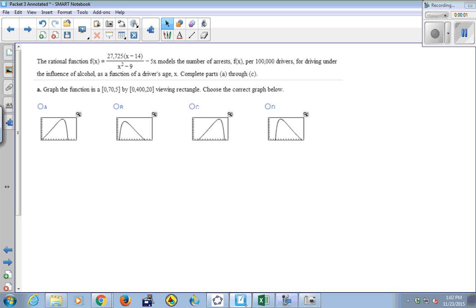So we've got a question from homework we're going to go over. We have a rational function, f of x. This is from class 31, the last problem in class 31. It models the number of arrests per 100,000 drivers for driving under the influence of alcohol as a function of a driver's age. So I want to graph this function, and if you don't have a graphing calculator, you use the free GeoGebra.